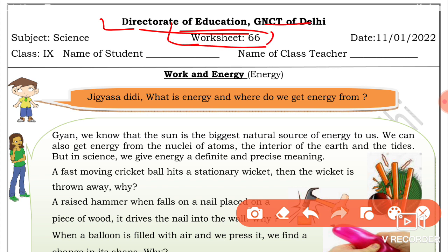Worksheet number 66 for class 9th. The subject is science and the date is 11 January 2022. You will write your name and your class.